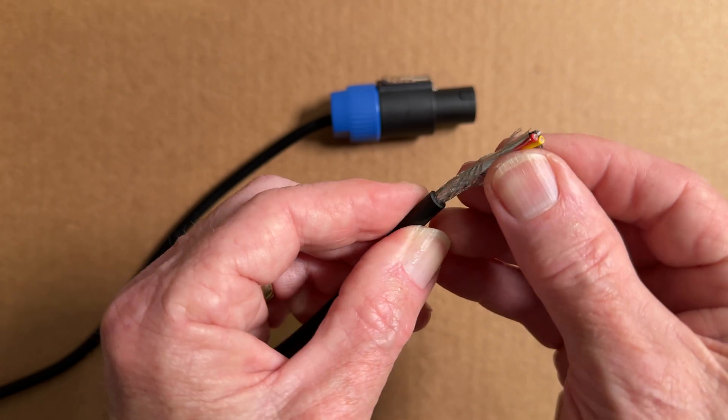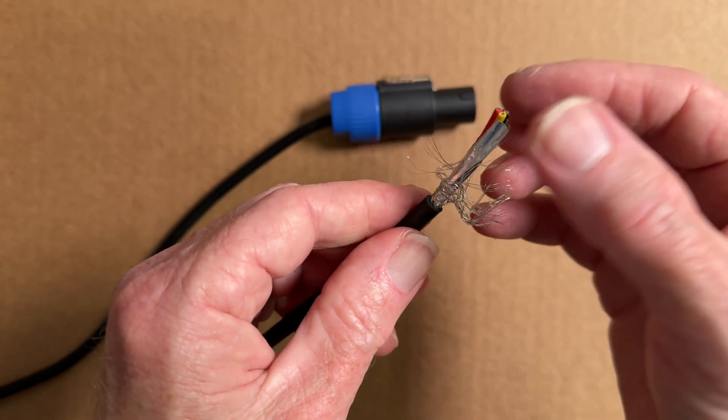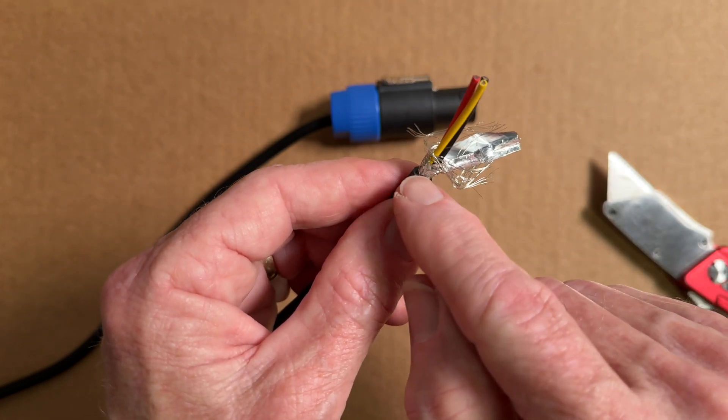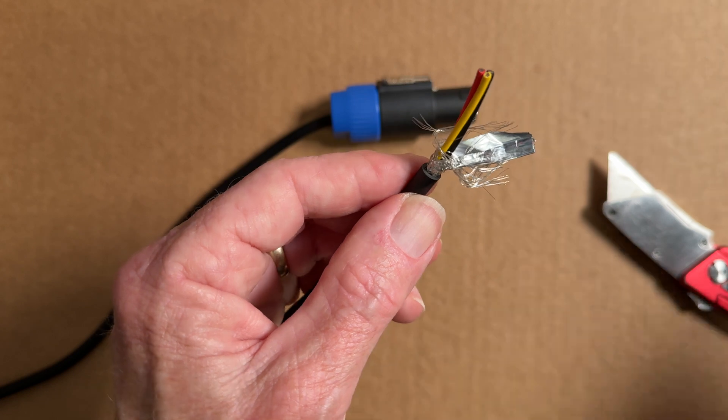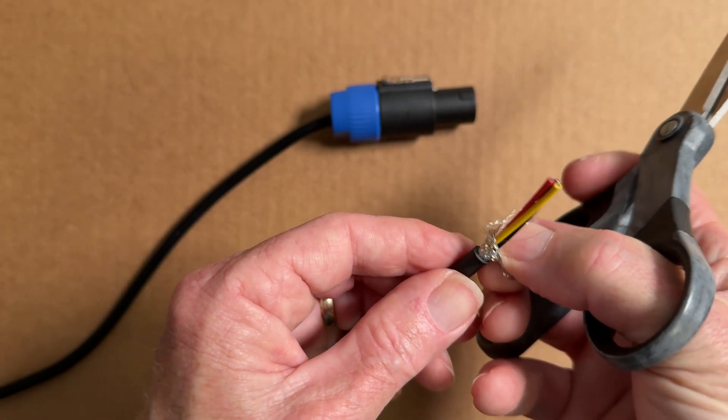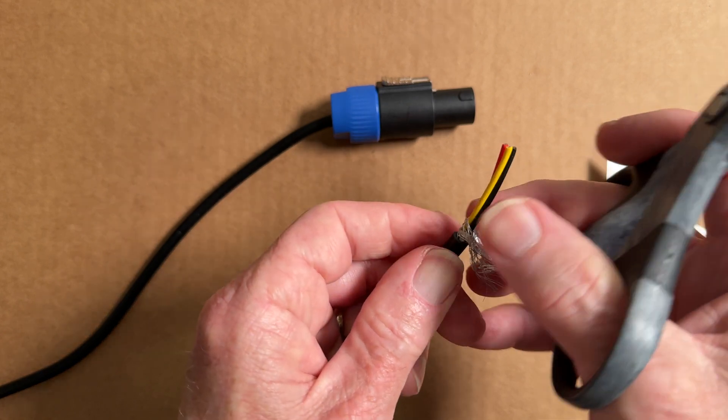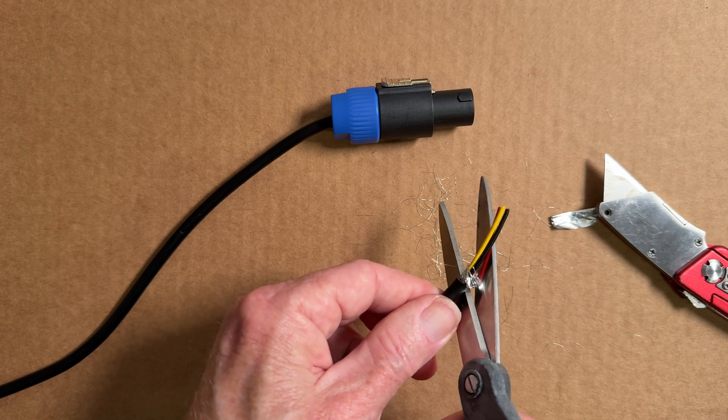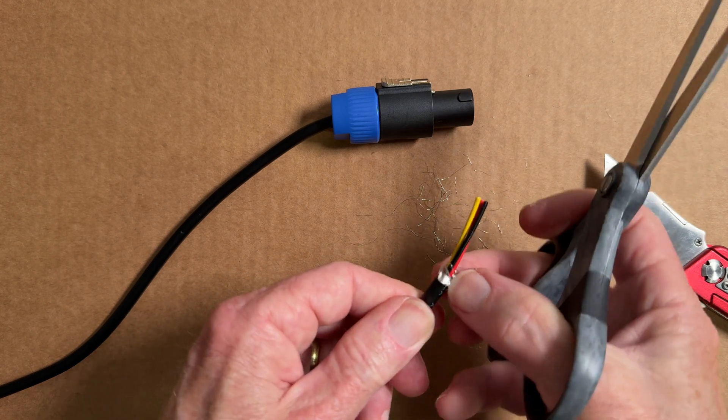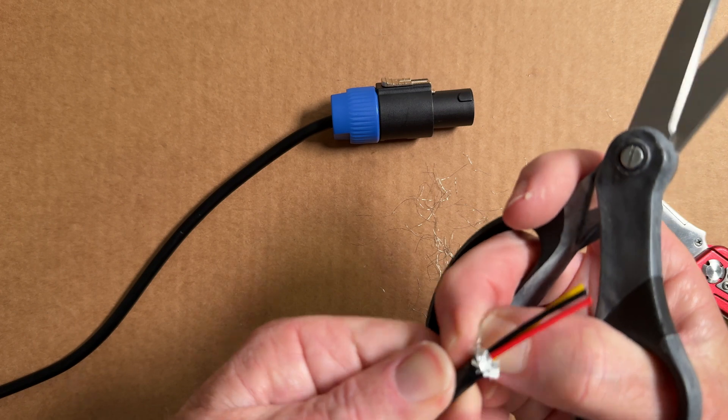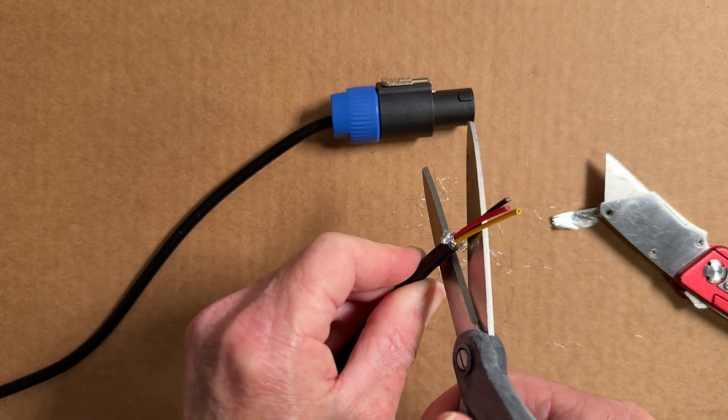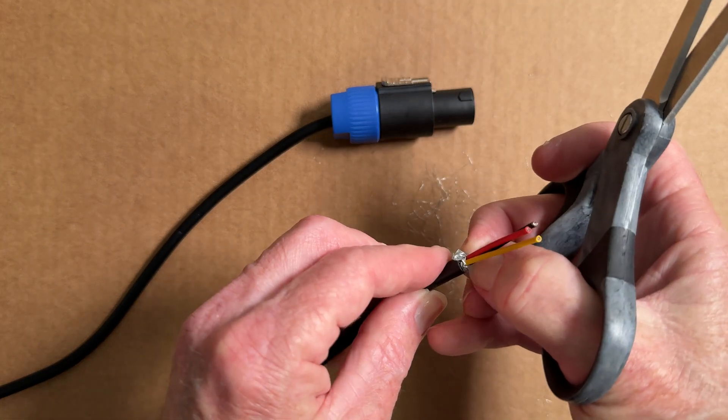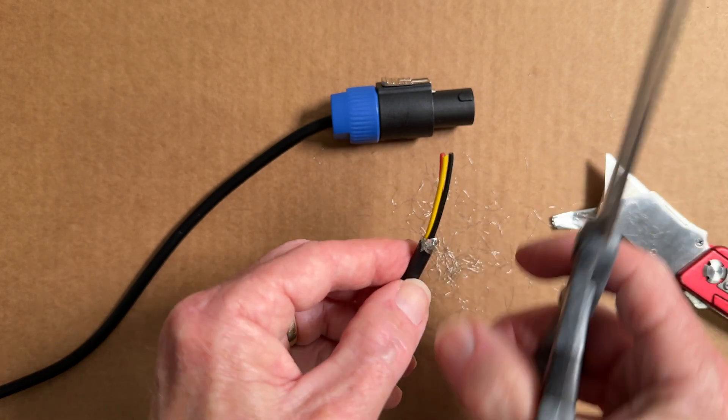Now we're going to pull this braided shield and foil shield back out of the way, and we're going to trim that off back here. We don't need any of that extending any further than that. Use whatever you like, a pair of scissors works just fine. This stuff is not very hard to cut. There's a lot of little fine wires here. Just be patient. You may have to work your way around a little bit, peel things back and keep trimming.